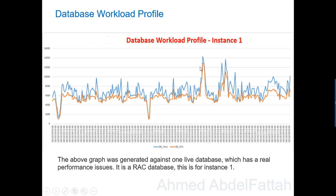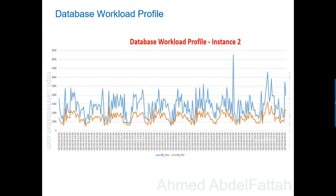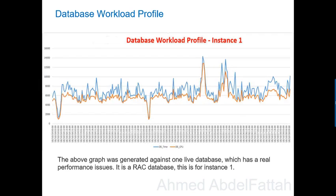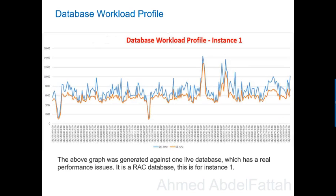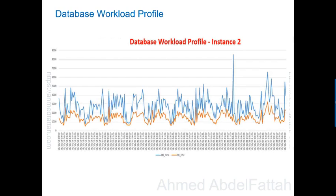You can then drill down by generating AWR reports across the peak time and examine the problem. This type of graph is very powerful for troubleshooting performance issues. You can also see the distribution of workload across the RAC — across instance one and instance two — to determine which instance is highly loaded, and then distribute the work evenly after that.